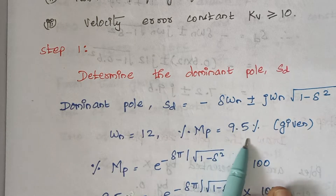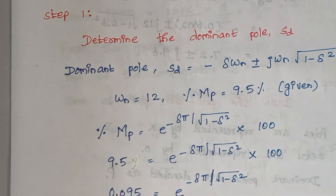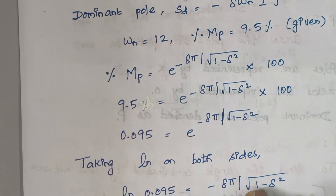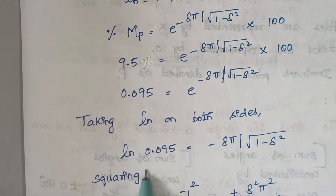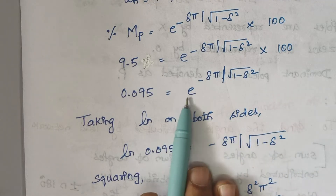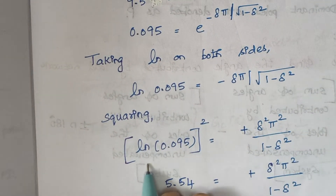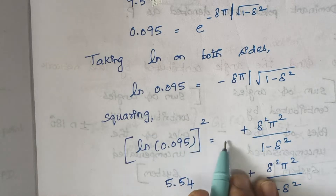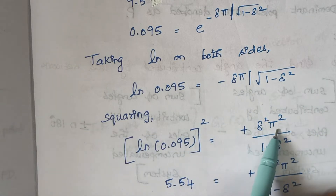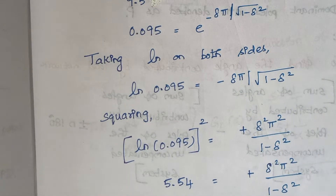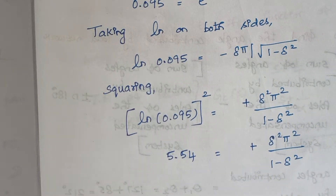Percentage MP is given as 9.5%. Substituting the value 9.5, when you move 100 to the left hand side this value becomes 0.095. The next step is we are going to take ln on both sides. When you take ln on both sides, the exponential term gets cancelled. The next step is squaring on both sides. When you square on both sides, ln of 0.095 whole square equals zeta square pi square, and taking square root gives 1 minus zeta square.